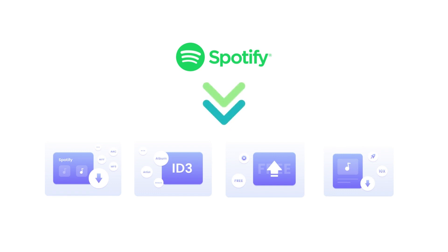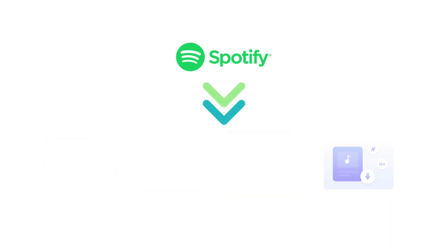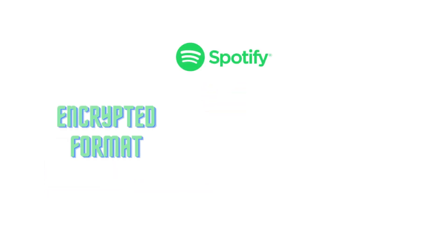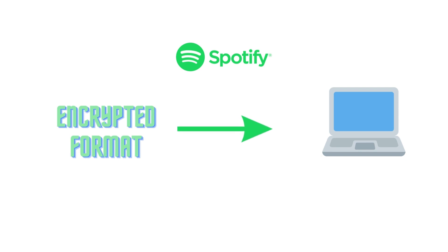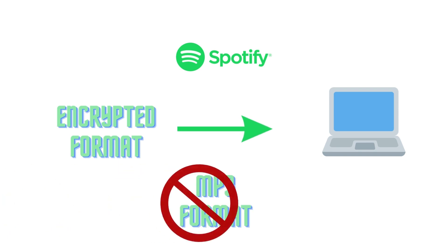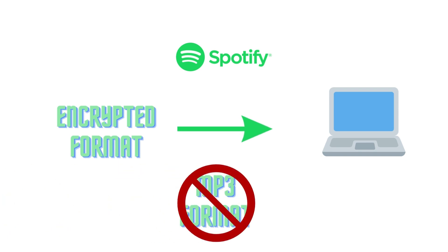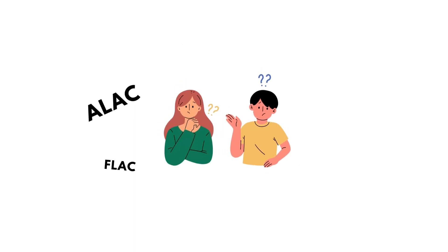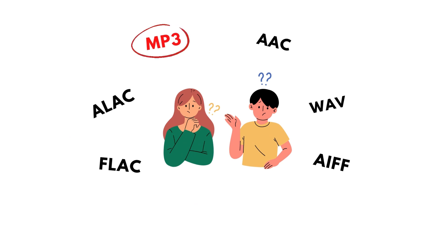Spotify allows premium users to download songs and playlists for offline streaming, but the downloaded music is saved in encrypted OGG format instead of normal MP3 files. Many people wonder if it is possible to download Spotify playlists to the conventional MP3 format. This is not possible directly through the Spotify app, but it can be achieved with the help of some third-party tools.